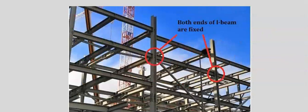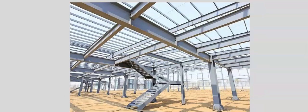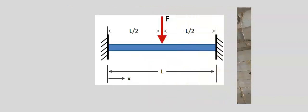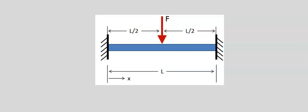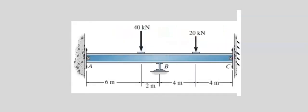Fixed beams are very common in structural frames. They can be constructed using timber, steel, or reinforced concrete. The loading of a fixed beam can be a point load, a uniformly distributed load, or other forms of complex loading.